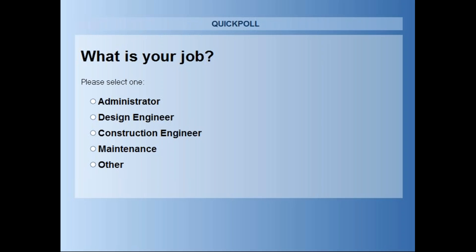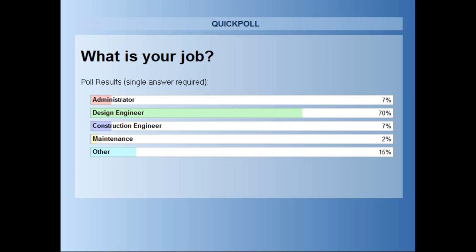Let's go to some poll questions: what's your job? Results show we have design engineers — that's wonderful. When I talk about fundamentals and the importance of following our policies and standards, you're very familiar with that, and whether we can modify some of those things to better serve the driver and make the road safer. We also have some construction engineers at 7%, administrators at 7%, and maintenance at 2%. That's actually good for maintenance, because perhaps there are some things maintenance could do — if they have a problem intersection, perhaps just with paint to make minor corrections that better serve the driver making those turning movements.